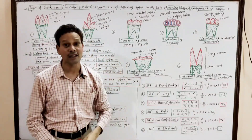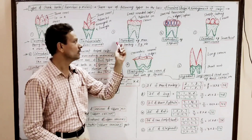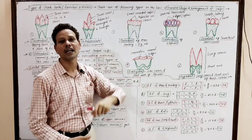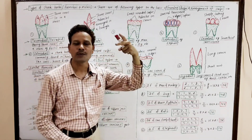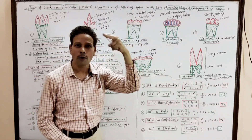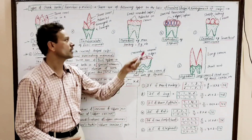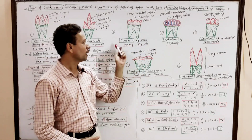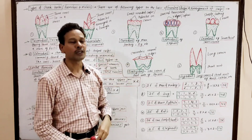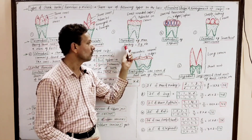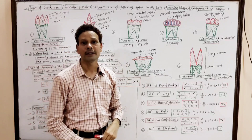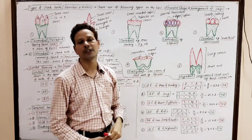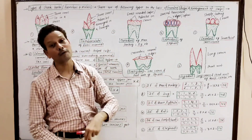Type number three is bunodont. These are characteristics of man. Note down: here the small rounded cusps — the tubercles — which are small and rounded in shape, are present on the crown. Bunodont teeth are found in man, donkey, and pig.